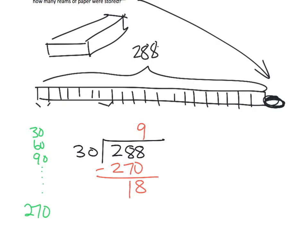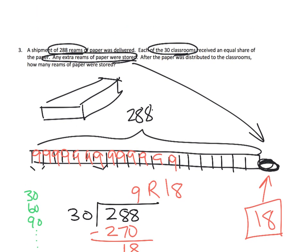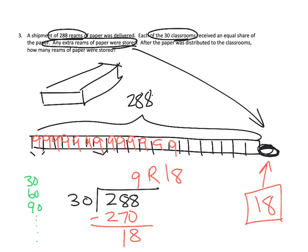And we subtract and we get a remainder of 18. So that means each of our classrooms gets nine reams of paper. Each of the 30 classrooms gets nine, and we're going to have 18 reams of paper left over. So going back up here, it says how many reams of paper were stored? 18.